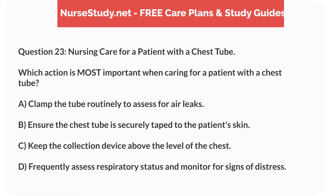Question 23. Nursing Care for a Patient with a Chest Tube. Which action is most important when caring for a patient with a chest tube? A. Clamp the tube routinely to assess for air leaks. B. Ensure the chest tube is securely taped to the patient's skin. C. Keep the collection device above the level of the chest. D. Frequently assess respiratory status and monitor for signs of distress.